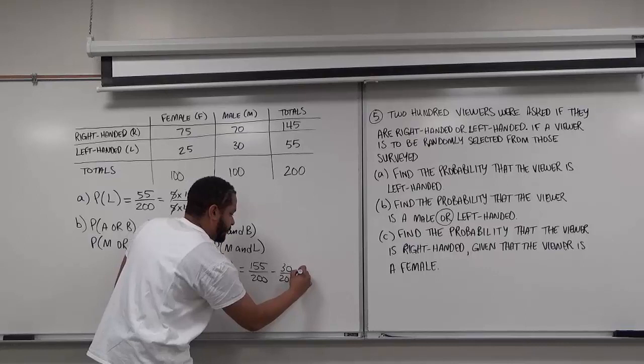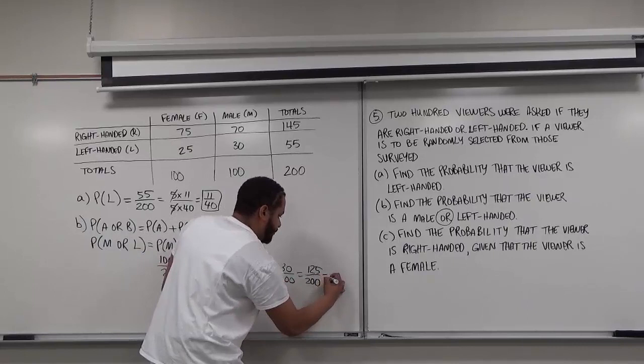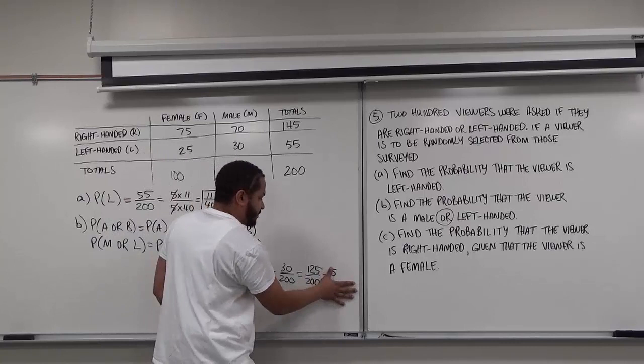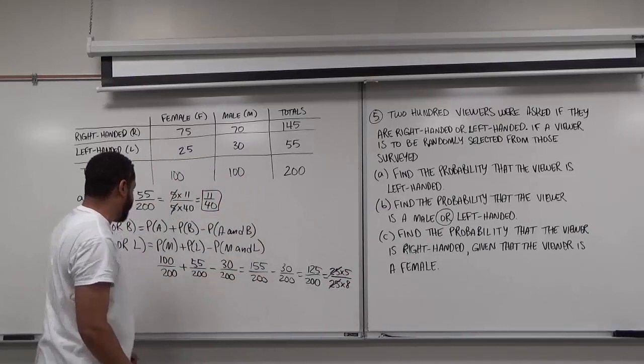Adding the numerators: 100 plus 55 is 155 over 200, then subtracting 30 gives us 125 over 200. We reduce this using a common factor of 25: 125 is 25 times 5, and 200 is 25 times 8. So our final result is 5 over 8. The probability of the viewer being male or left-handed is 5/8.